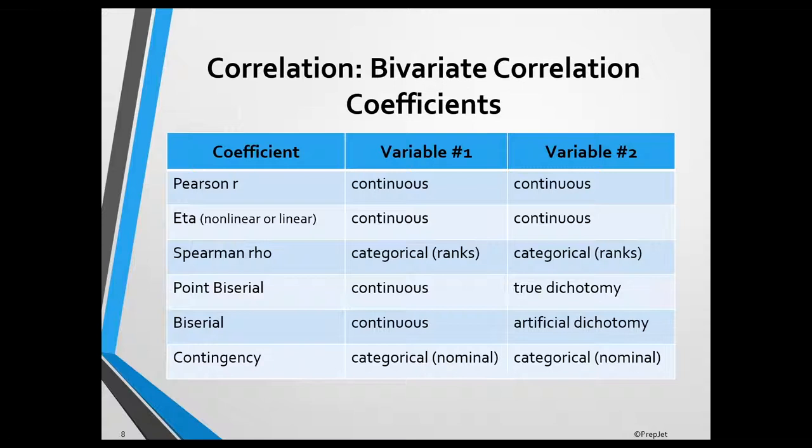The biserial correlation coefficient is used when one variable is continuous and the other is an artificial dichotomy. An artificial dichotomy occurs when a continuous variable is dichotomized. EPPP scores would represent an artificial dichotomy when a cutoff score is used to divide the scores into two categories: pass or fail. The biserial correlation coefficient would be used to determine the correlation for hours spent studying for the EPPP and dichotomized EPPP scores.